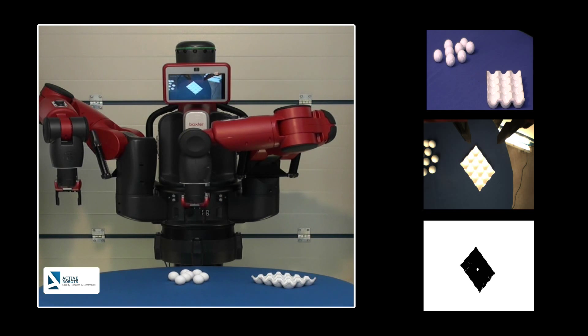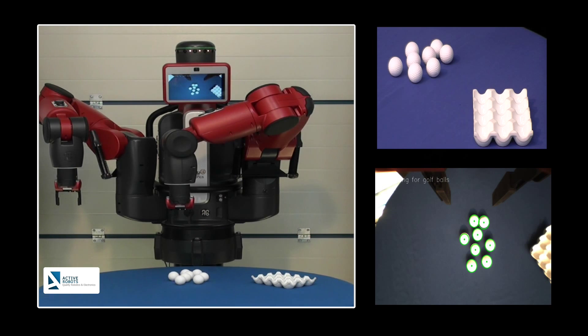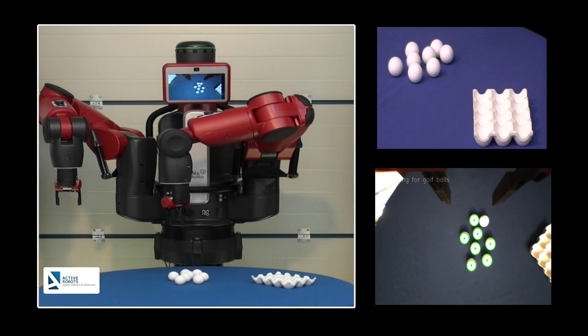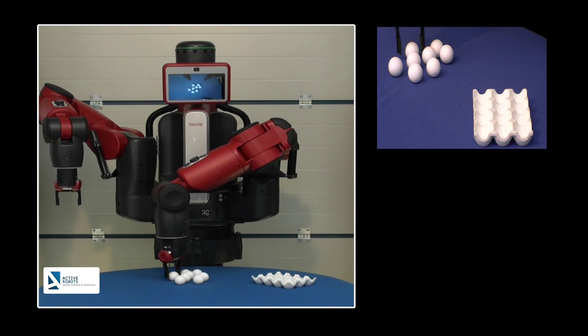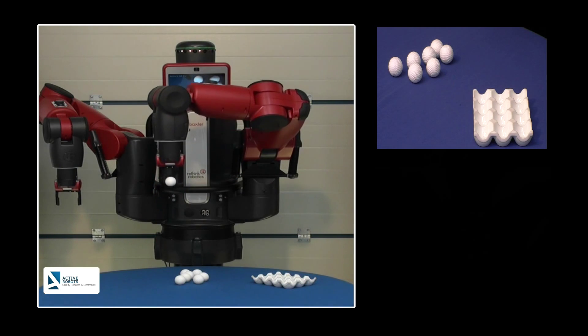It now knows where the tray is. It's now looking across at the balls, trying to find the ball that's furthest away from the egg tray. Selected the ball, now rotates the grippers to get the best angle on picking up the ball, picked up the ball, moving it across to the egg tray.